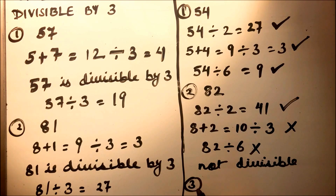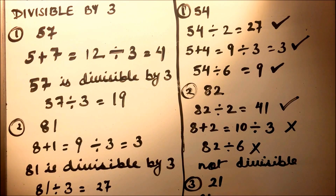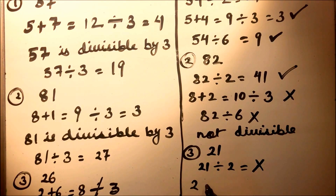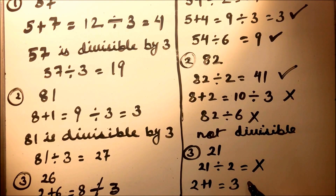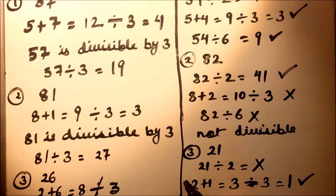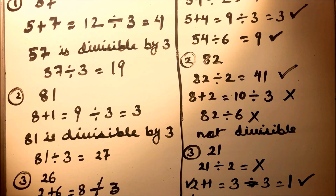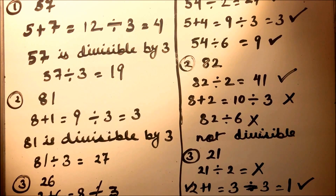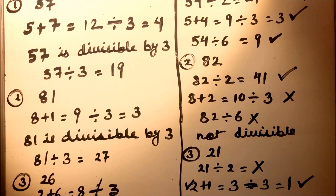Let's take another example: 21. We see that 21 is not divisible by 2 because it is an odd number. We can check if it is divisible by 3 — yes, 21 is divisible by 3 — but 21 is not divisible by 6 because it is not divisible by 2. If a number fails the divisibility test for 2, it will not be divisible by 6.